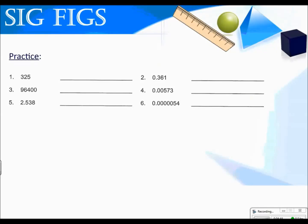Let's look at some practice. In the first example, none of the three digits are zeros, so all are significant — three sig figs. In number two, the leading zero doesn't count, so we start with the first real number and look to the right: three significant figures. For number three, there's no decimal, so only the three non-zero digits count as sig figs. The zeros at the end don't count because there's no decimal — we're assuming this number is rounded.